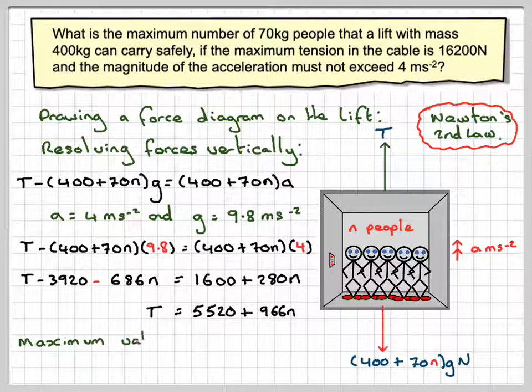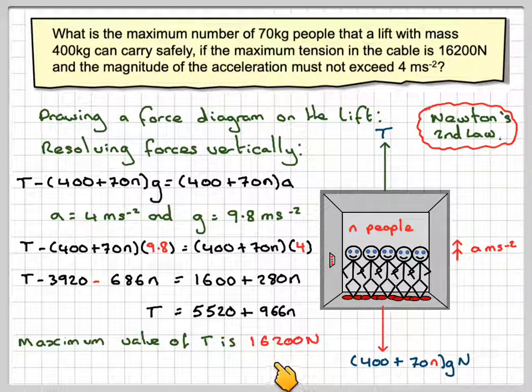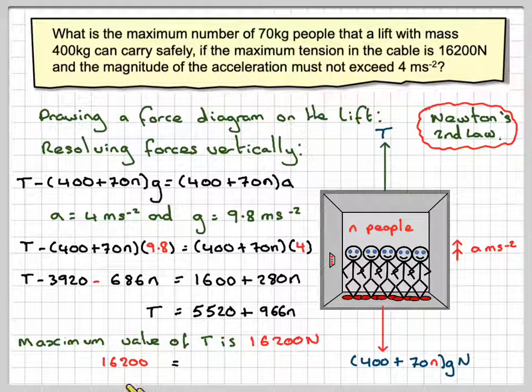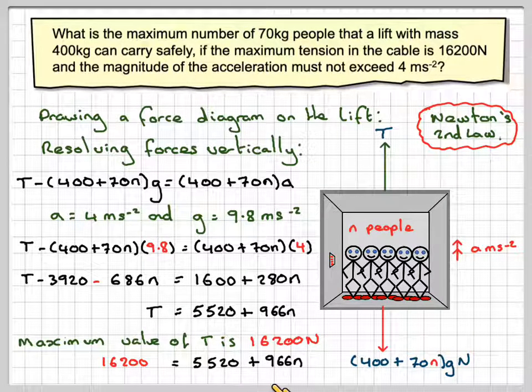So the maximum value of the tension is 16,200N. So it's going to be 16,200N is equal to 5,520 plus 966N.